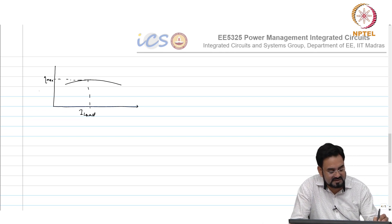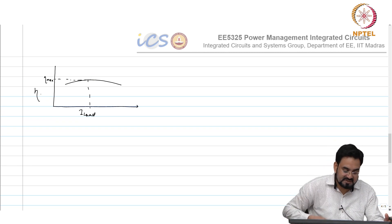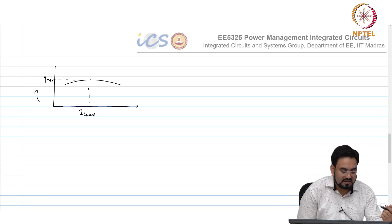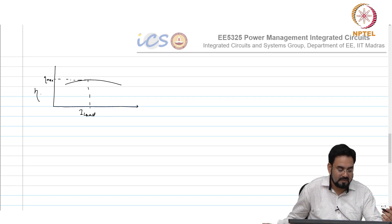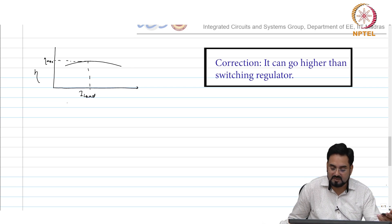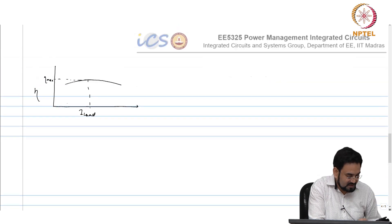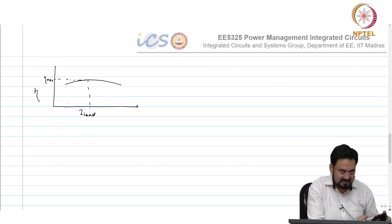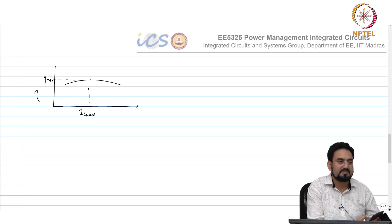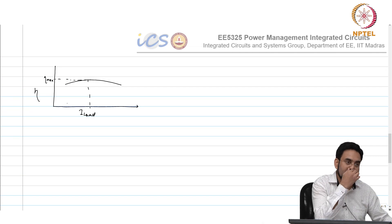In most cases we target a maximum efficiency of 90% or above in switching regulators. In a linear regulator the efficiency curve may be different — shifted down based on dropout voltage, or it may go even higher. For example, if I want to generate 1.8V and my input is 1.85V, the drop is 50mV, so 1.8 divided by 1.85 gives 97.3%, which is very high and almost impossible to achieve with a switching regulator.